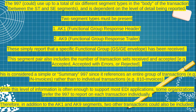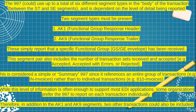Two segment types must always be present in a 997: first is AK1, called the functional group response header, and the other is AK9, called the functional group response trailer. These simply report that a specific functional group GS/GE envelope has been received. This segment pair also includes the number of transaction sets received, accepted — for example accepted, accepted with errors, or rejected. This is considered a simple summary 997 since it references the entire group of transactions.